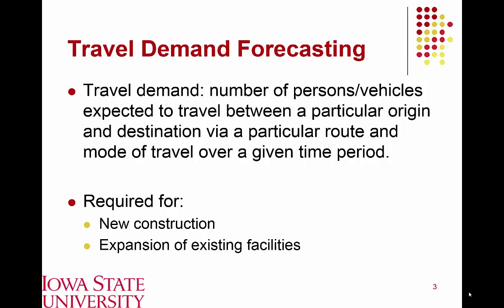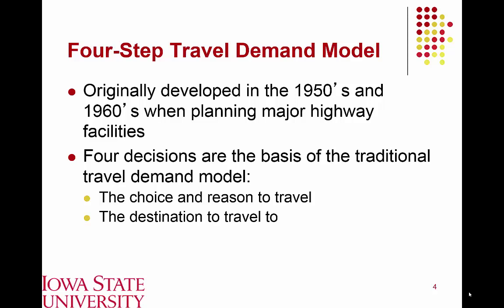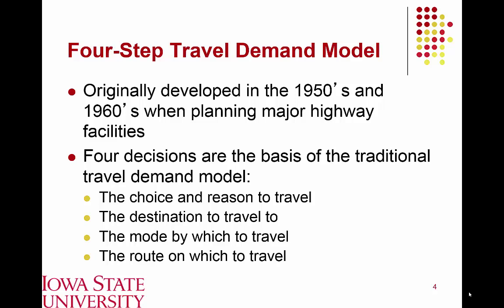Travel demand forecasting research largely dates back to the 1950s and 60s during large-scale interstate highway construction. The forecasting model developed at that time modeled four travel behavior decisions: why a person needs to make a trip and when; where they are traveling to; what mode of transportation to use, whether personal automobile or transit such as bus or light rail; and ultimately which route to travel from point A to point B.